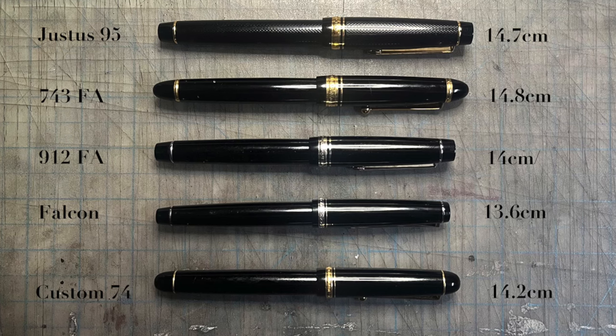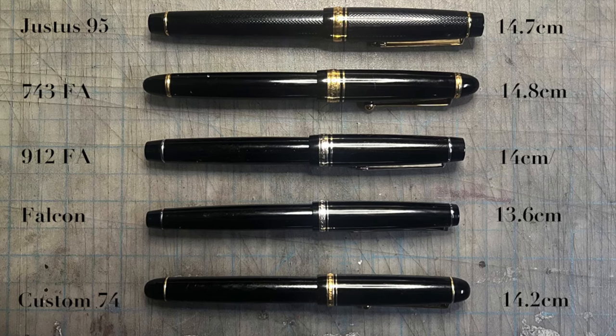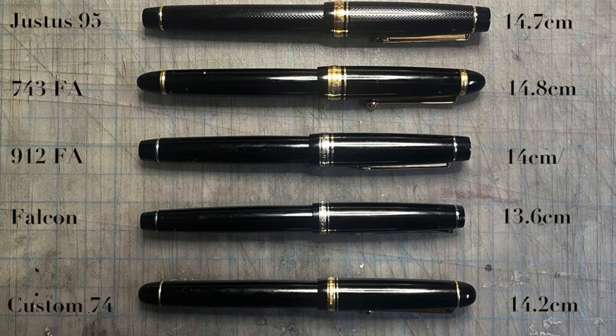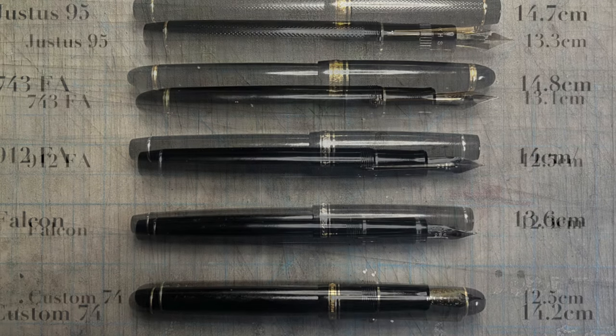Now let's get to the actual comparisons by first talking about what these pens have in common. The difference in length and girth between these pens is slight, with the shortest being the Pilot Falcon and the longest being the Justice. The difference between the longest and shortest is just over a centimeter.